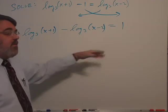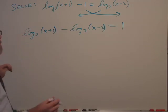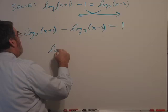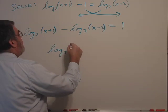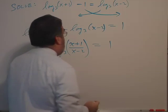Now here I've got a subtraction, so that means when I combine into a single logarithm it's going to be a division. So I end up with log base 3 of (x+1) over (x-2) equals 1.